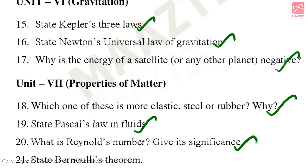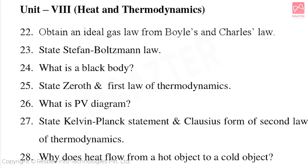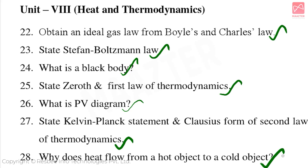Unit 8 Heat and Thermodynamics — important two-mark questions: Obtain an Ideal Gas Law from Boyle's and Charles' Law. State Stefan–Boltzmann's Law. What is a Black Body? State Zeroth and First Law of Thermodynamics. What is a PV Diagram? State Kelvin–Planck Statement and Clausius' form of the Second Law of Thermodynamics. Why does heat flow from a hot object to a cold object?